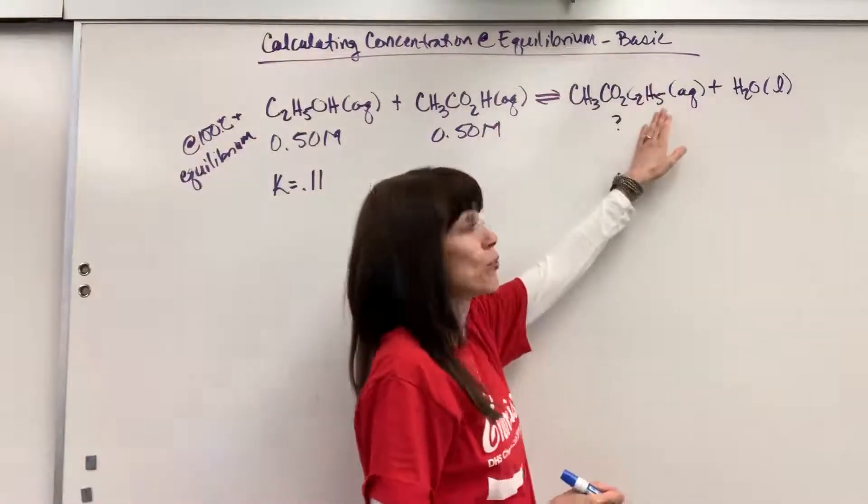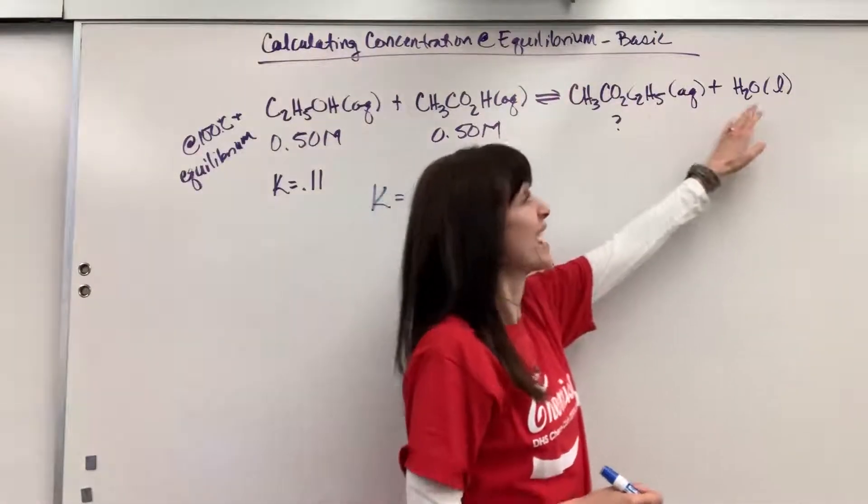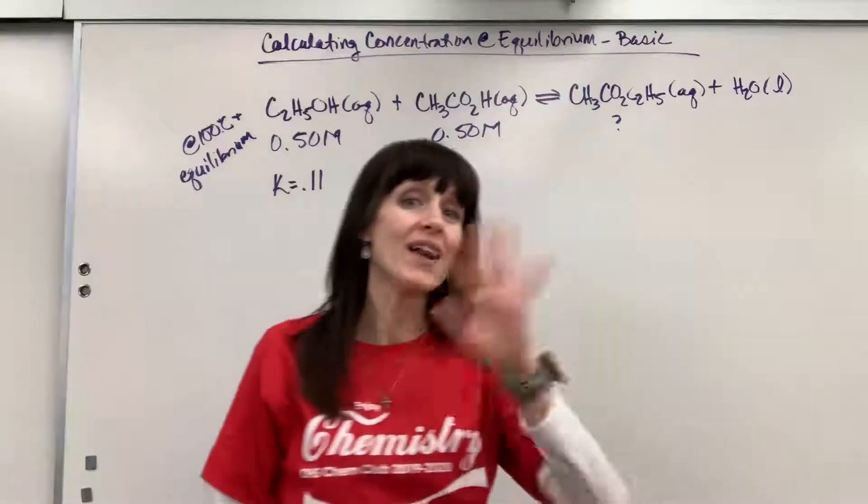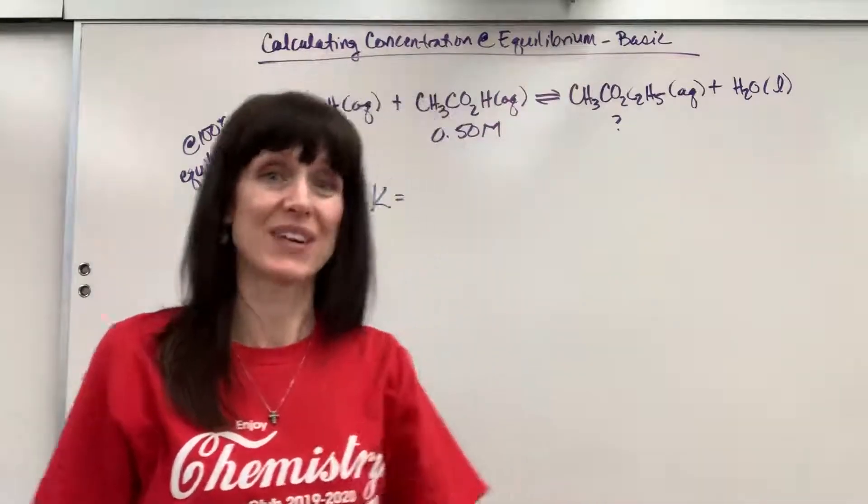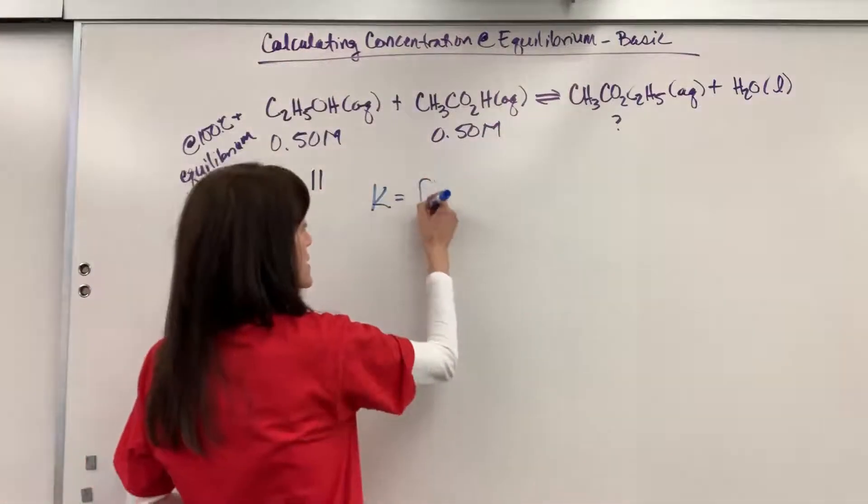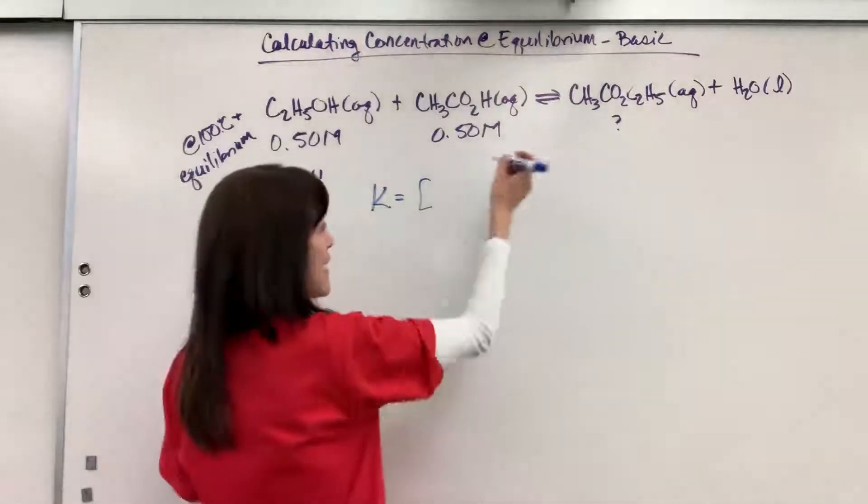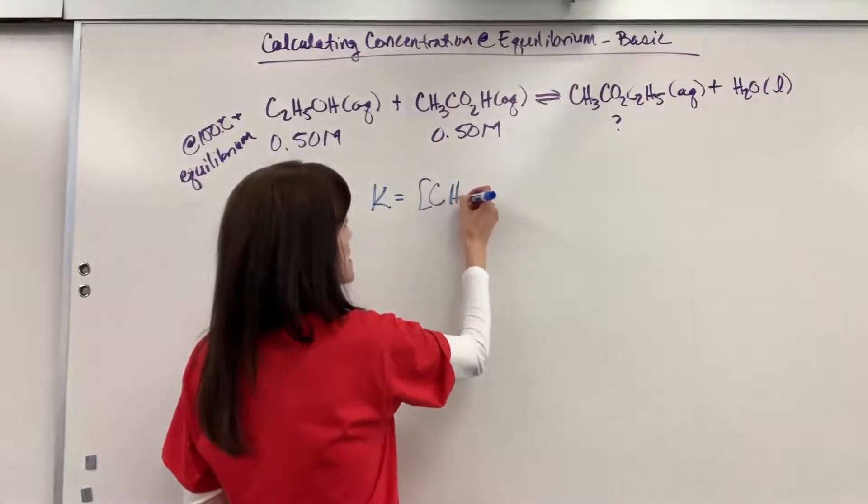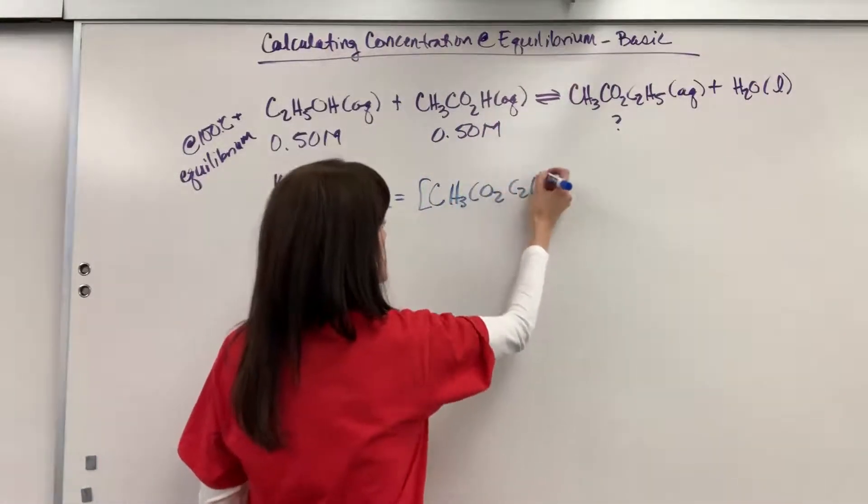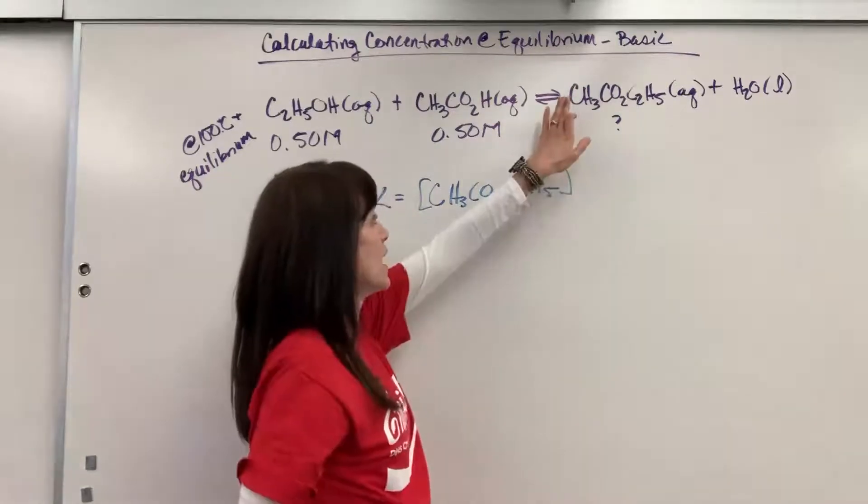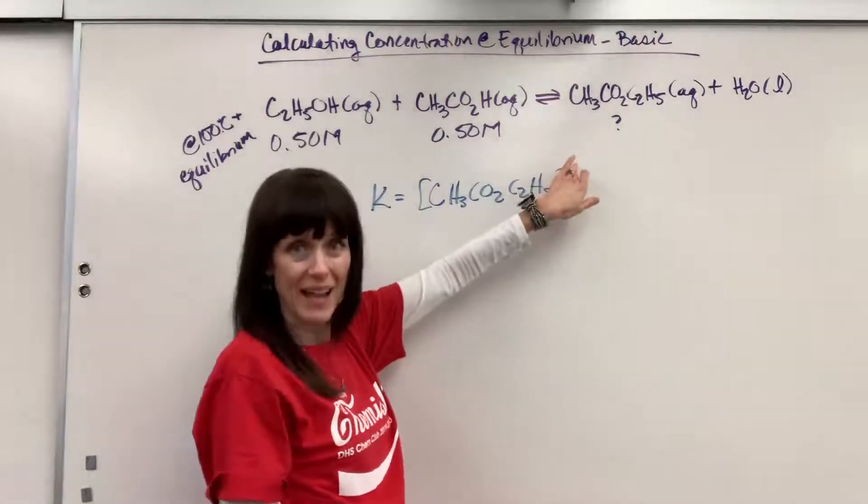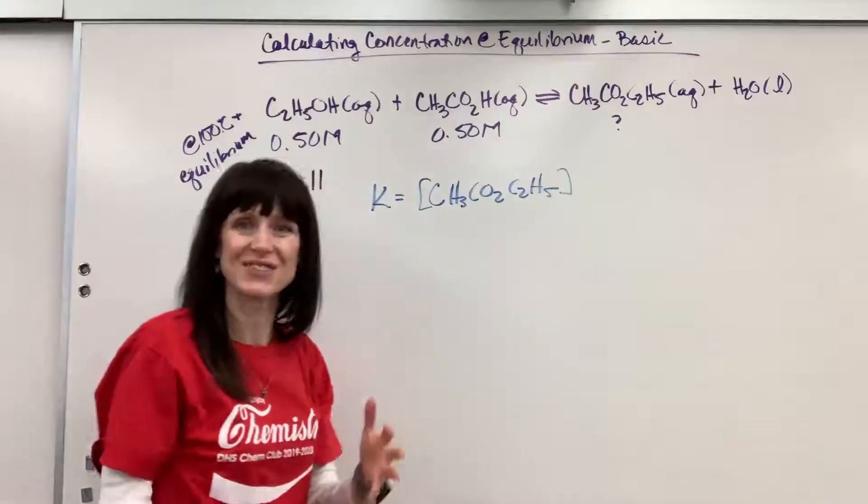Looking at my products, I have one aqueous, the ethyl acetate, and water which is liquid, so I don't write the water down. My product is only the ethyl acetate, C3CO2C2H5. That has a coefficient of 1, so the exponent is 1.